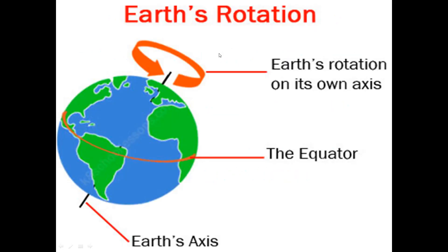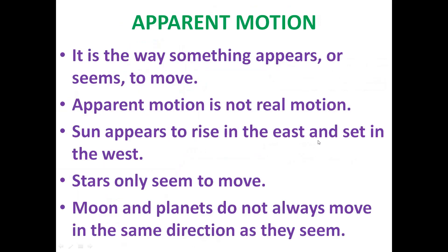Looking at a picture of the earth rotating: the central imaginary line is the earth's axis, the line around which the earth rotates. We can also see the equator — the central line running east to west across the earth.